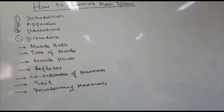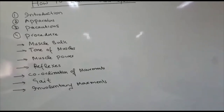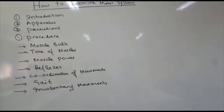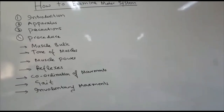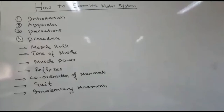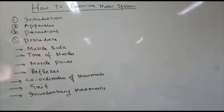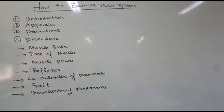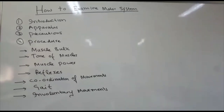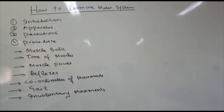Basically, the motor system consists of the pyramidal system and the extrapyramidal system. In the pyramidal system, there are two motor pathways: the corticospinal tract and the corticobulbar tract. In the extrapyramidal system, they include fibers from the basal ganglia, red nuclei, reticular formation, and vestibular nuclei.